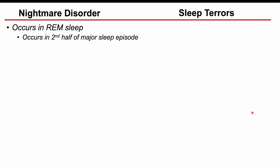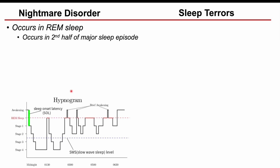Nightmare disorder occurs in REM sleep, and it's more likely to occur in the second half of a major sleep episode. If we look at the sleep stages, a patient will go into stage 1, 2, 3, 4, and they will go from 4 into 3 to REM. As the night goes on and the longer they've been sleeping, each cycle will have a bigger period of REM sleep. This is the reason why we can see nightmares occurring more frequently in the second half of the major sleep episode.